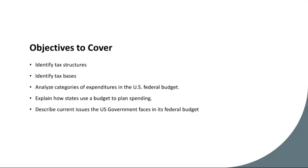Turning our attention to the U.S. federal budget, expenditures are classified into several categories, each serving distinct purposes and facing unique challenges. Discretionary spending represents funds that Congress can adjust each year through the appropriations process. This category covers a wide range of government functions, including defense, education, transportation, health care, and environmental protection. Discretionary spending allocations reflect policymakers' priorities and often spark heated debates over resource allocation and government priorities.